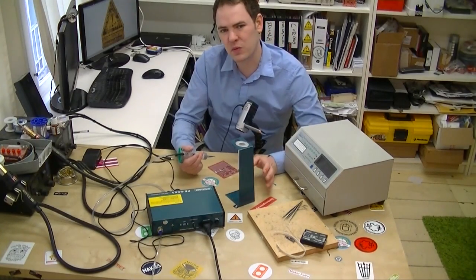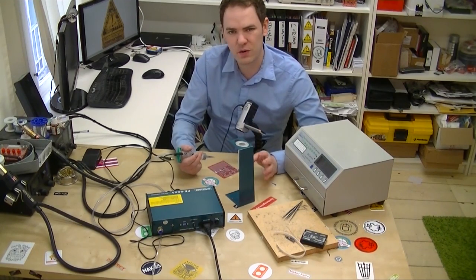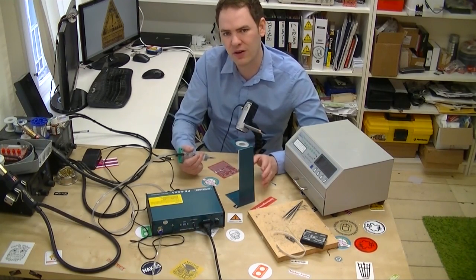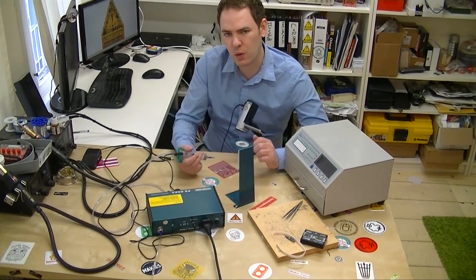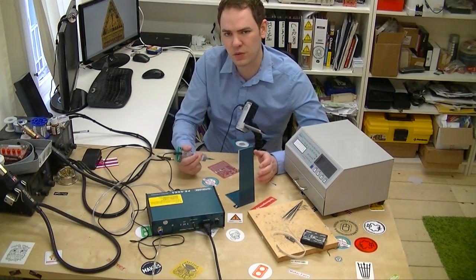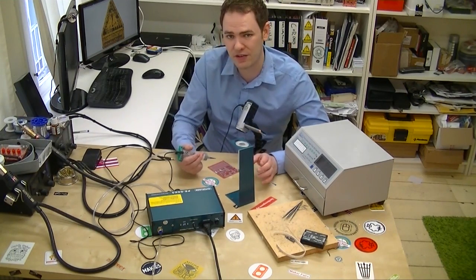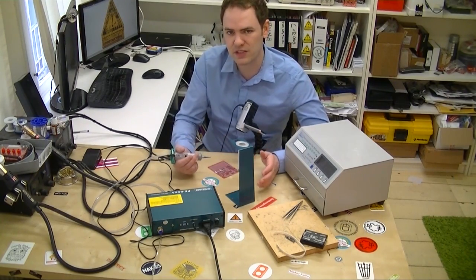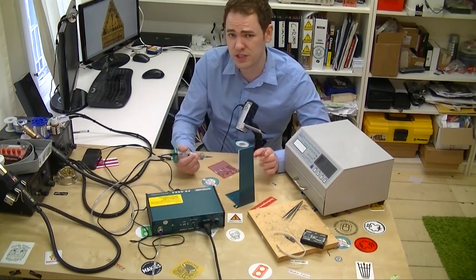The solder paste dispenser works better for us than a stencil. A stencil costs anywhere from $15 to $25 for every board. If you're just doing a one-off prototype and you're not quite sure it'll work, especially if you're sure you're going to have a second revision, then that's a lot of extra money for each set of boards, especially when boards are so cheap now.